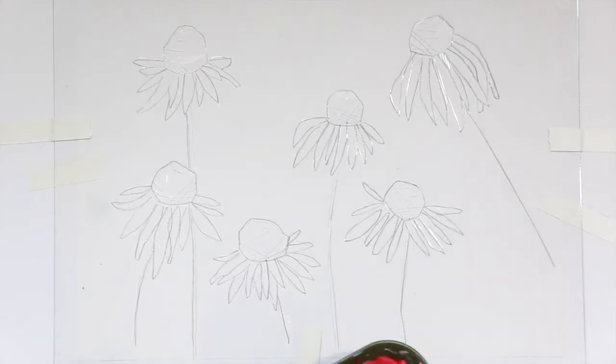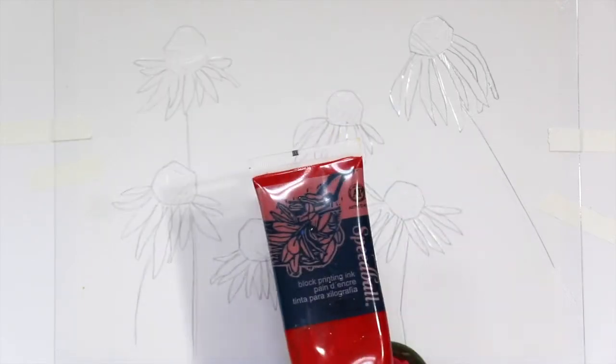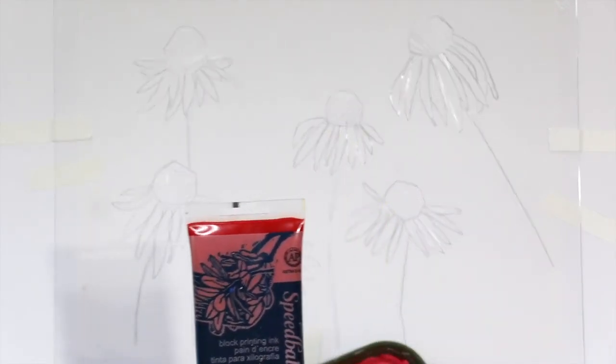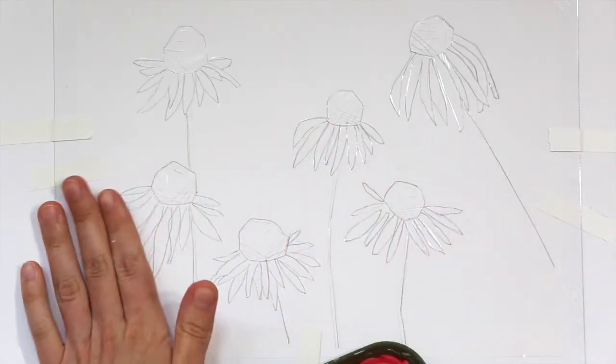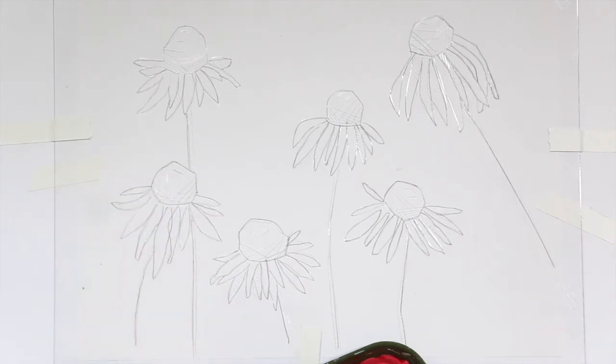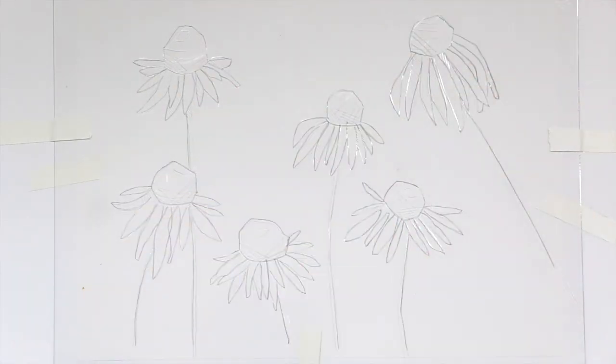I've used Speedball block printing ink that's water soluble. I used red, pink, and white to make this pretty coral color. These were like hot pink coneflowers, so I wanted to do something in a similar color. I've just stirred them together and I'm going to use a scrap of matte board to scrape it along my plastic so that I can get it into the grooves that I carved.